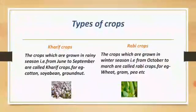First we will discuss Kharif crops. The crops which are grown in rainy season, that is from June to September, are called Kharif crops. The examples are cotton, soya bean, and groundnut. In this picture, you can see a crop of cotton which is an example of a Kharif crop.